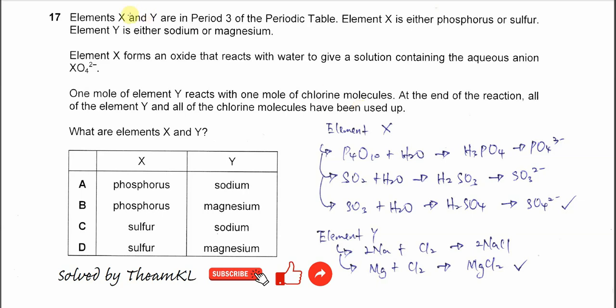Question 17. Elements X and Y are in period 3 of the periodic table. Element X is either phosphorus or sulfur. Element Y is either sodium or magnesium.